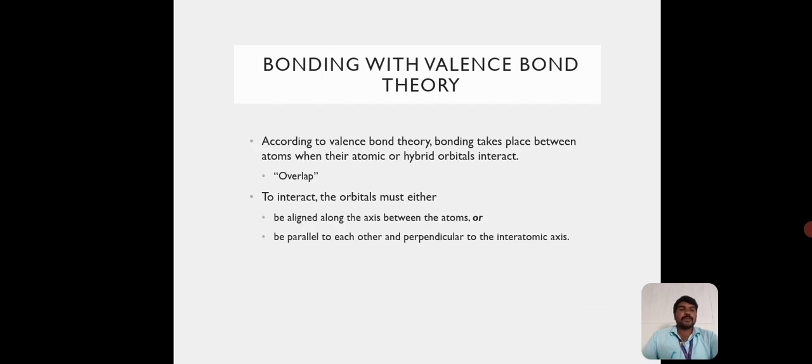Bonding with Valence Bond Theory: According to Valence Bond Theory, bonding takes place between the atoms when their atomic or hybrid orbitals interact. It is called overlap. To interact, the orbitals must either be aligned along the axis between the atoms or be parallel to each other and perpendicular to the interatomic axis.